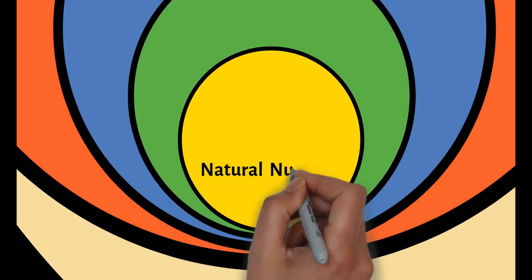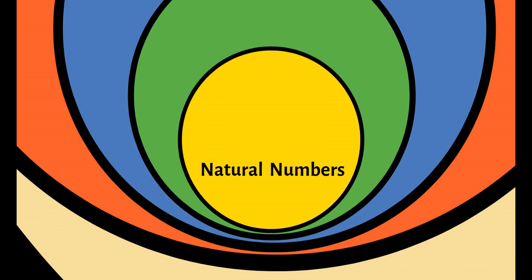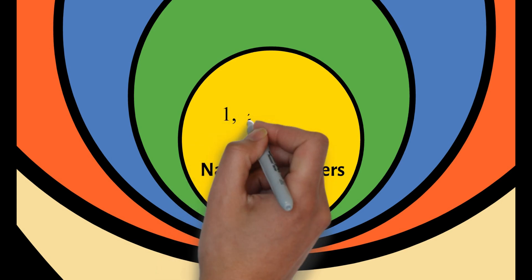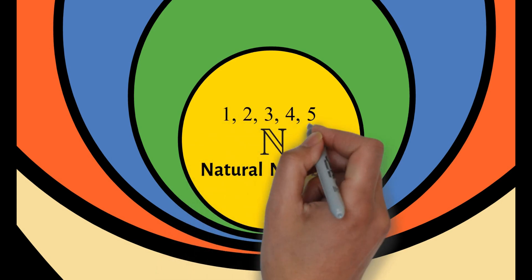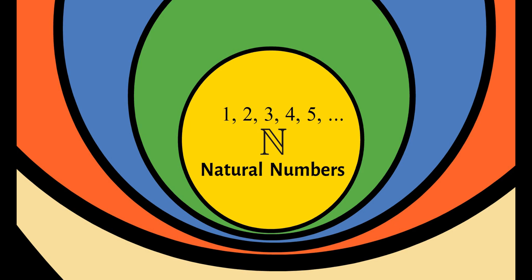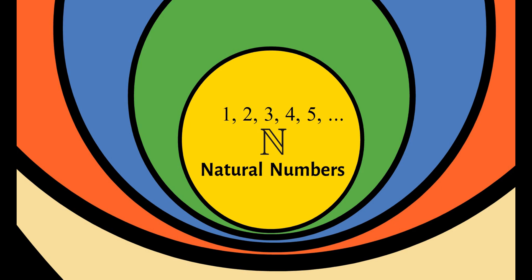Start tayo sa natural numbers. Ito ang pinaka-basic type of classification ng mga numbers. Ito ang symbol na ginagamit natin sa pagpropresent ng mga natural numbers. Natural numbers include numbers such as 1, 2, 3, 4, 5, and so on. Madalas din tawagin ito na counting numbers.